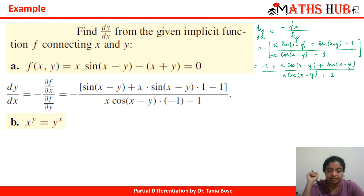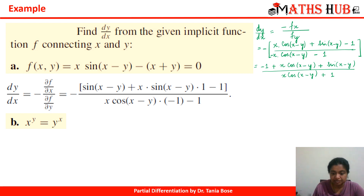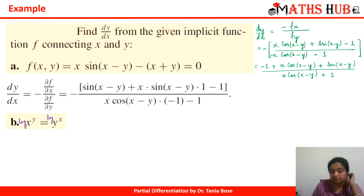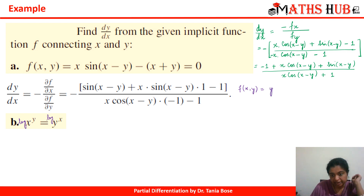Let's take another function: x^y = y^x. To do this, we take log on both sides. When you take all the terms on one side, you can define your function f(x, y) as y·log(x) minus x·log(y) = 0, using the exponent rule. Now it becomes very simple to apply the formula.